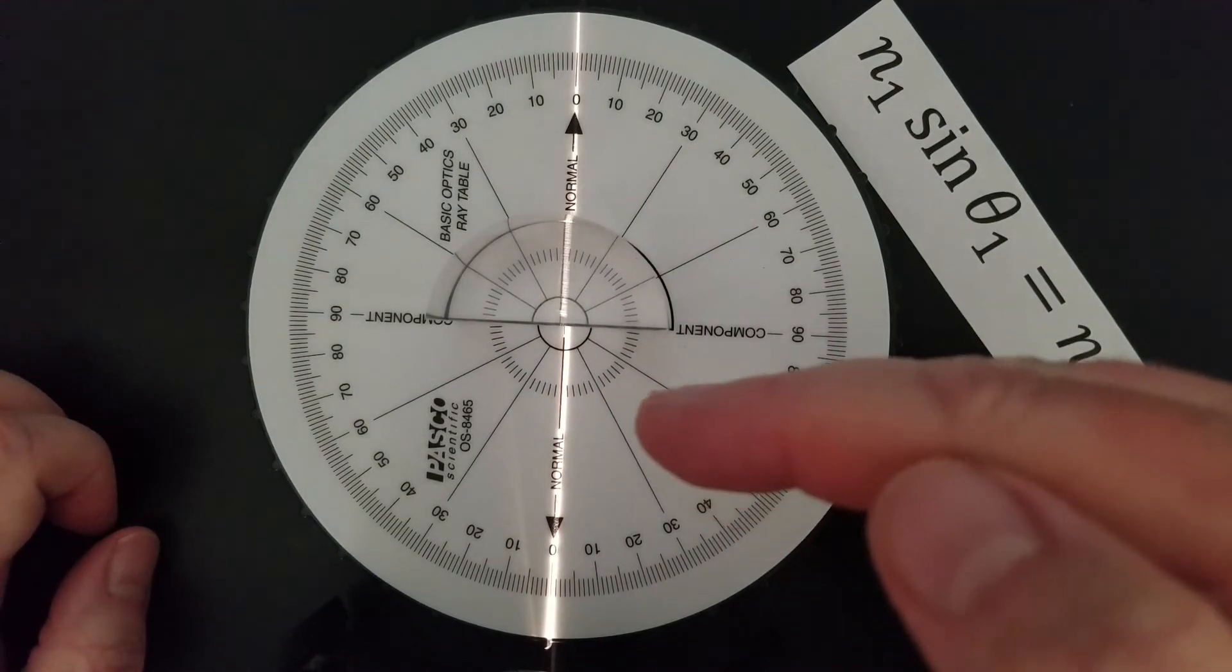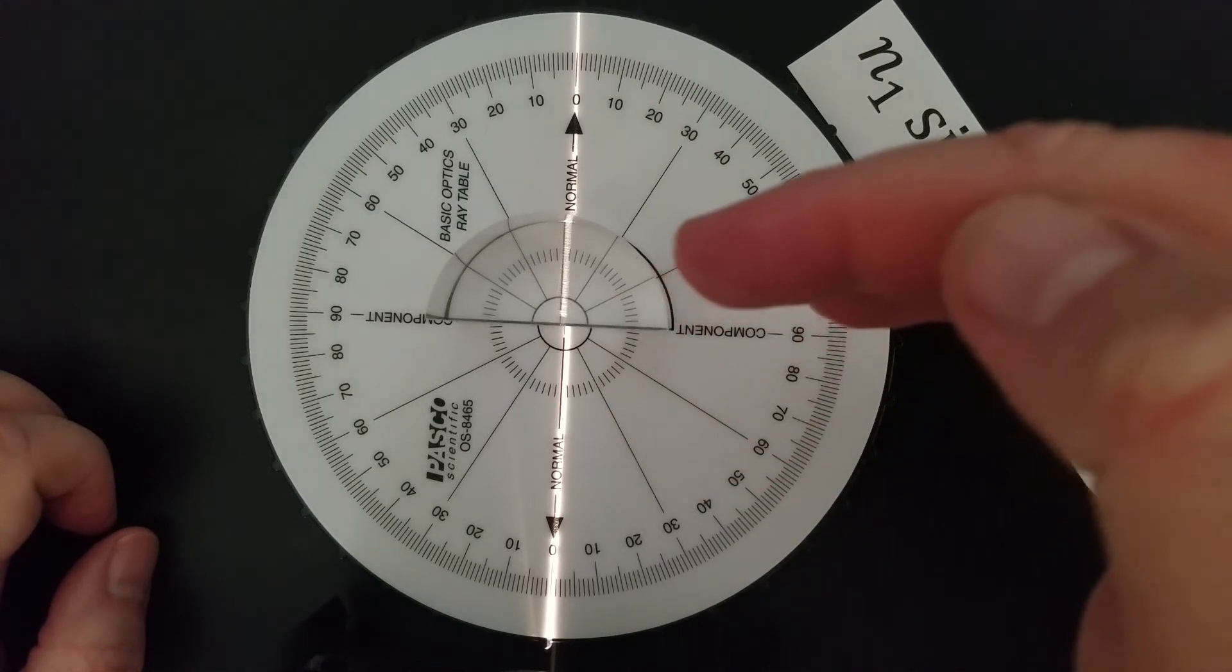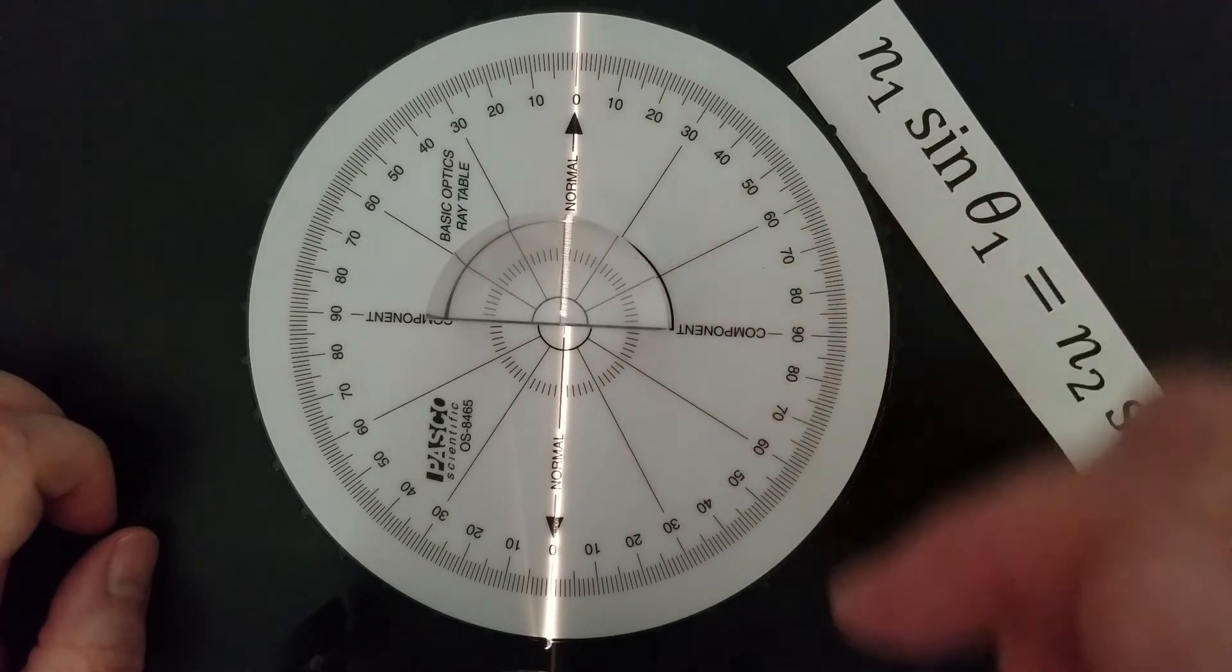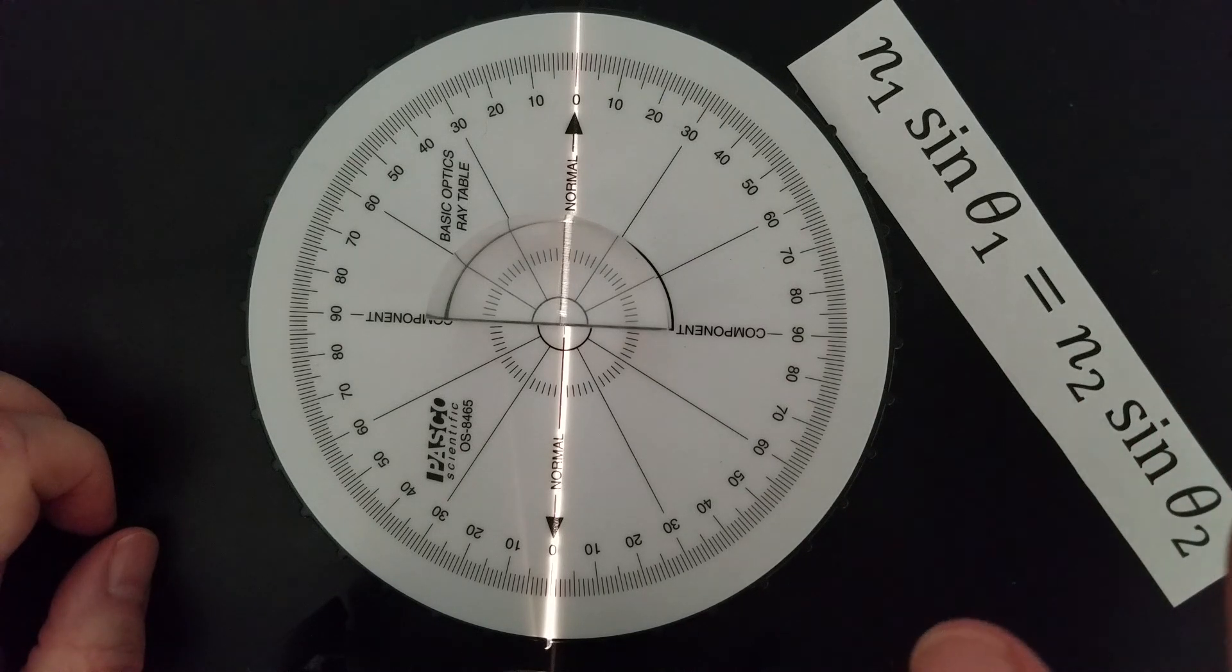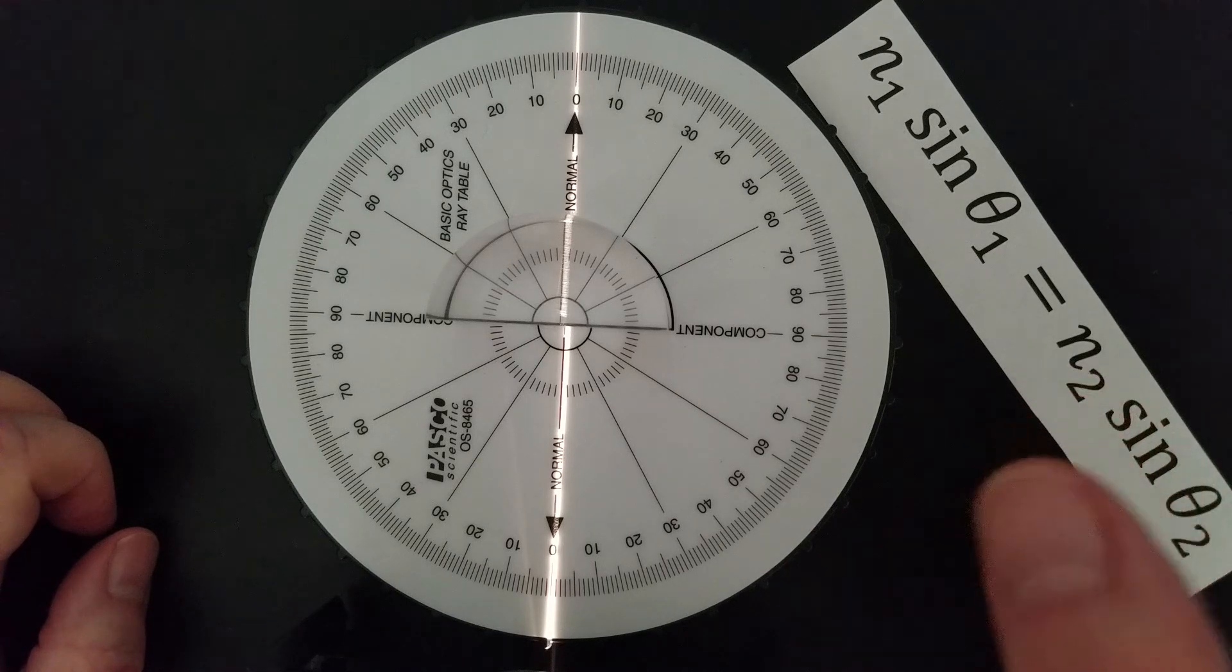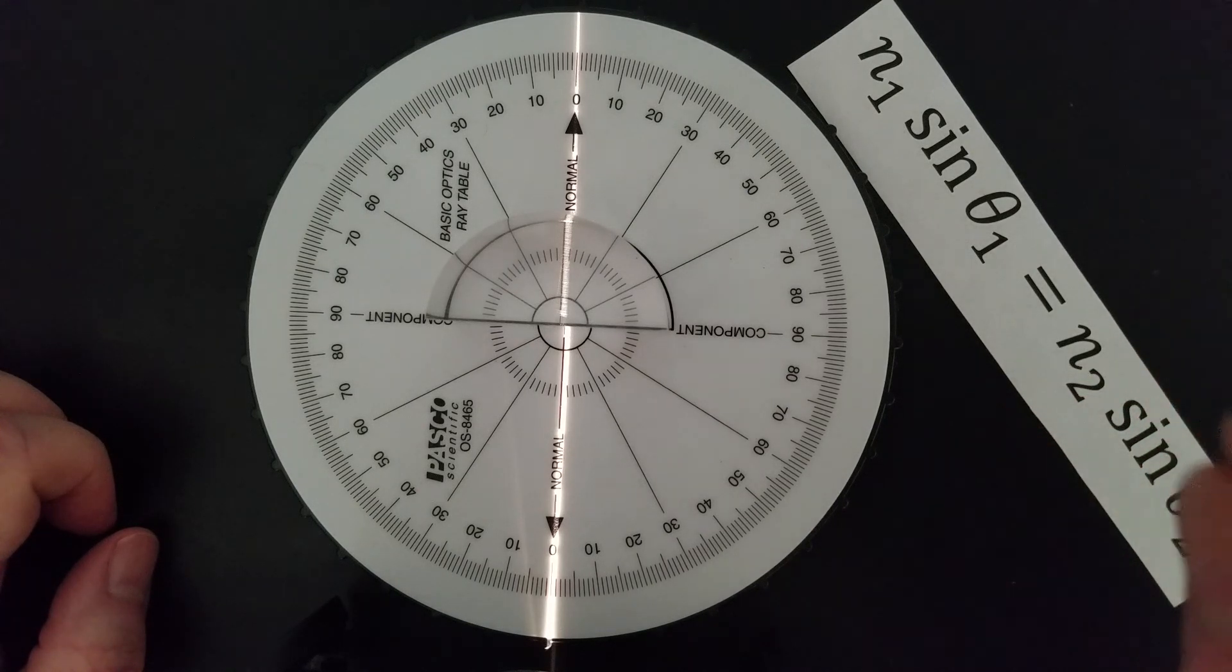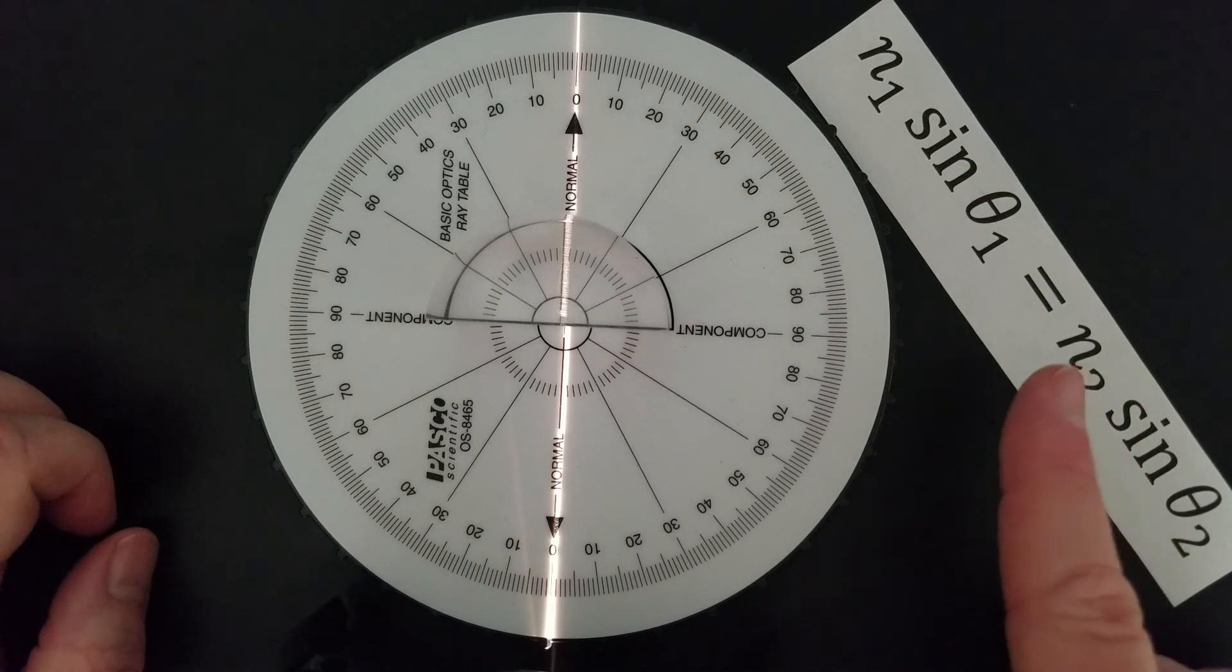But as light goes from a less optically dense material, air in this case, into a more optically dense material, which is this plastic here, light will change direction. It will turn and go towards the normal. And we can use Snell's Law to determine the index of refraction of that material.